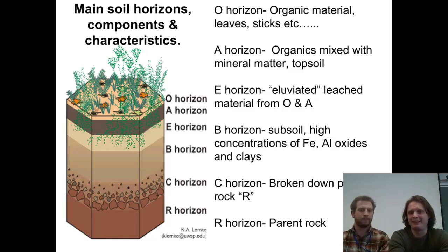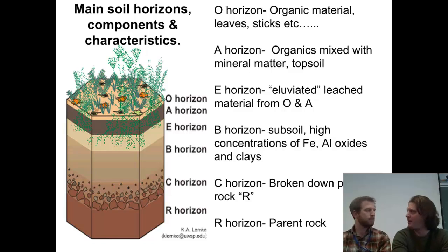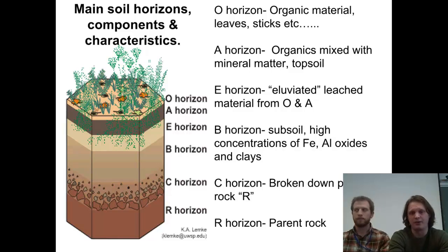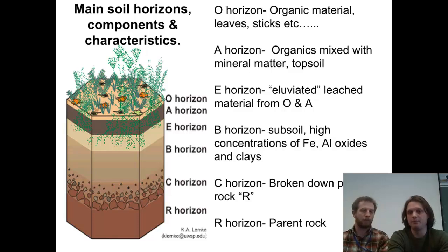And then they sit on top of C, which is the broken down parent material. That's when we talked about a lot of that mechanical weathering taking place, breaking it down, chemical weathering acting on it with the increased surface area. But it's basically the parent rock, as far down as it is broken up into pieces. And that last one, the R horizon, that's just the rock you're starting with — the parent rock.